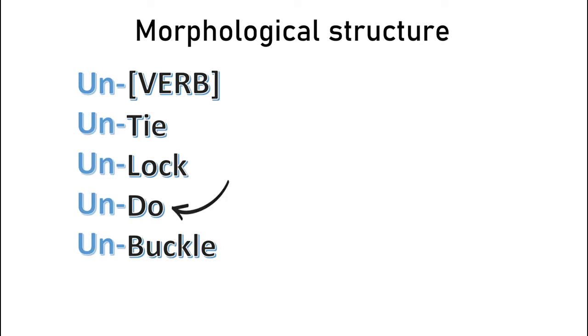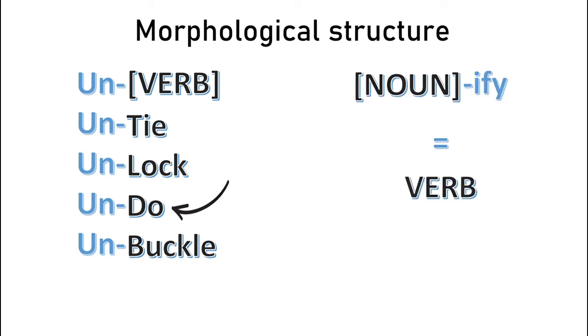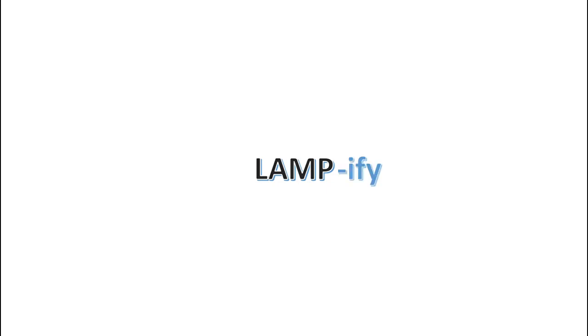You may not have known it explicitly, but the prefix un- can only attach to verbs and creates a new verb meaning to do the opposite of the initial action, as in do and undo. Similarly, the suffix -ify can only function to change a noun into a verb. In the example unlampify, -ify must attach to lamp first, creating the verb lampify, and then un- must attach afterwards, meaning to reverse the action of lampifying something.